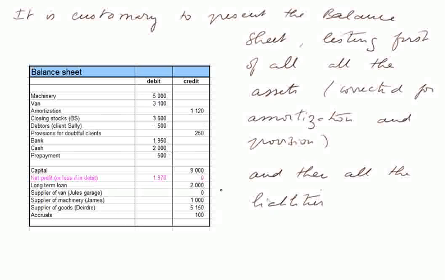And all these are liabilities. The capital is something due to the owners. The net profit or loss belongs to the liabilities because, if it were a profit, it would be something belonging to the owners. Here it happens to be a loss. We shall say a little more about the net profit later on.